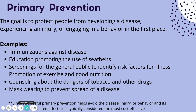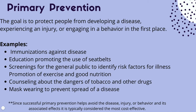Mask wearing during COVID is another example of primary prevention — we're trying to stop the spread of the disease. Other examples include immunizations, which prevent or slow the spread of disease, education about seatbelts, and screenings for the general public to identify risk factors. Screenings are really good because we can catch people who might be at higher risk and educate them to stop it from spreading further.